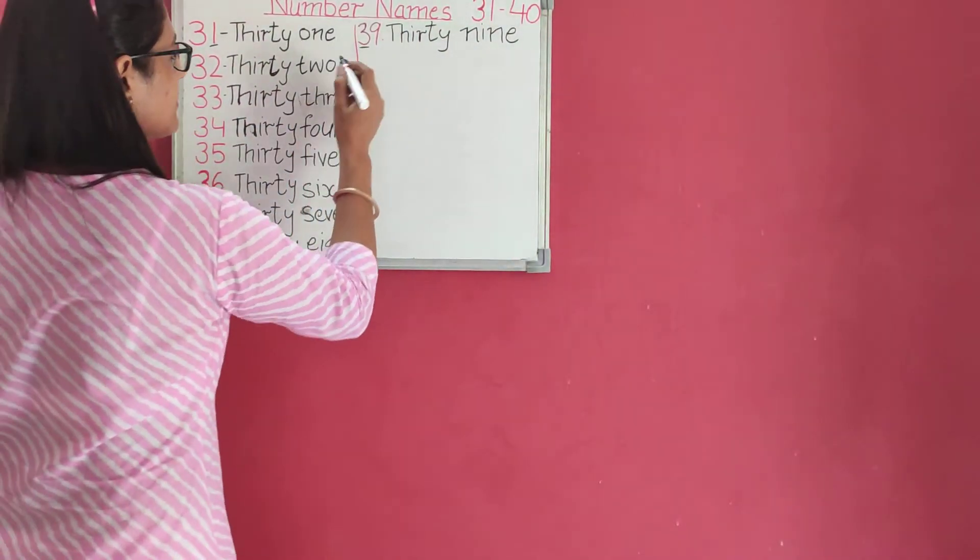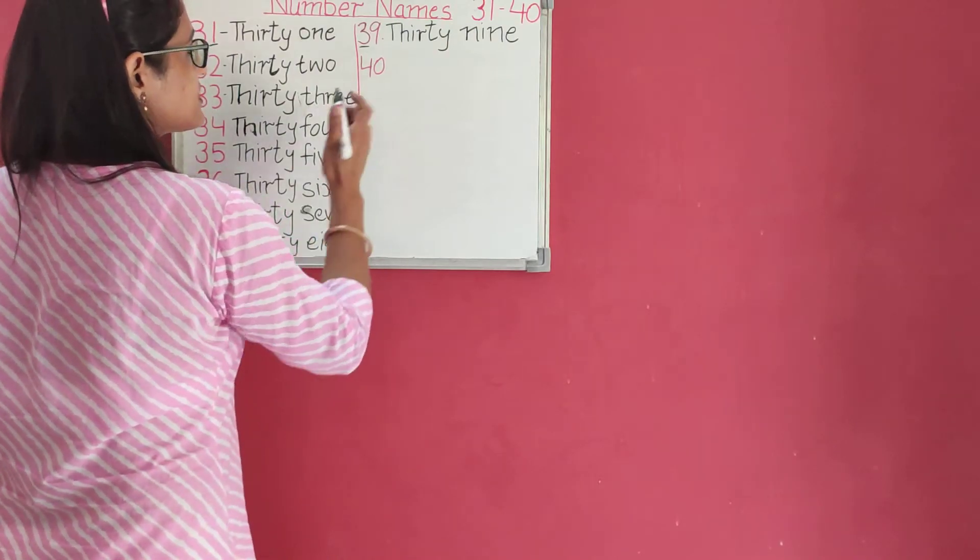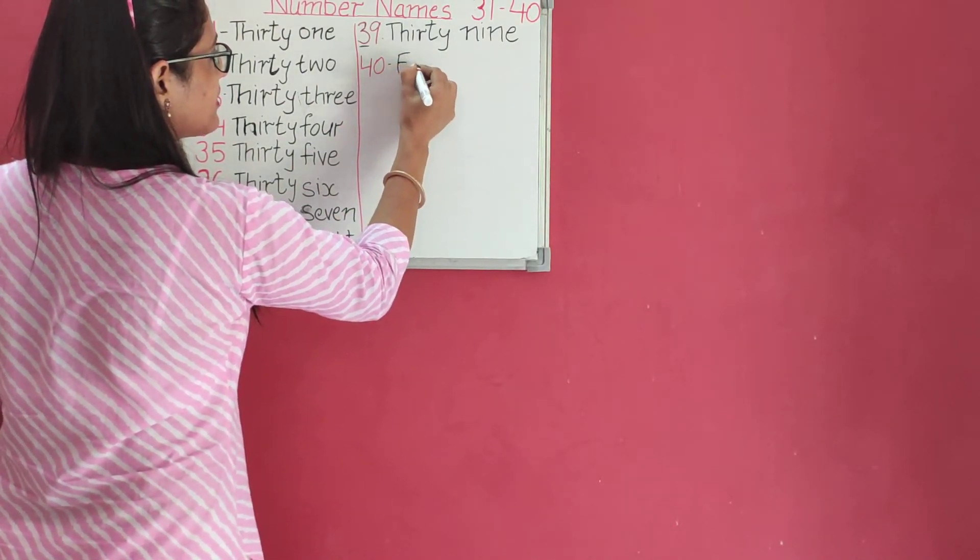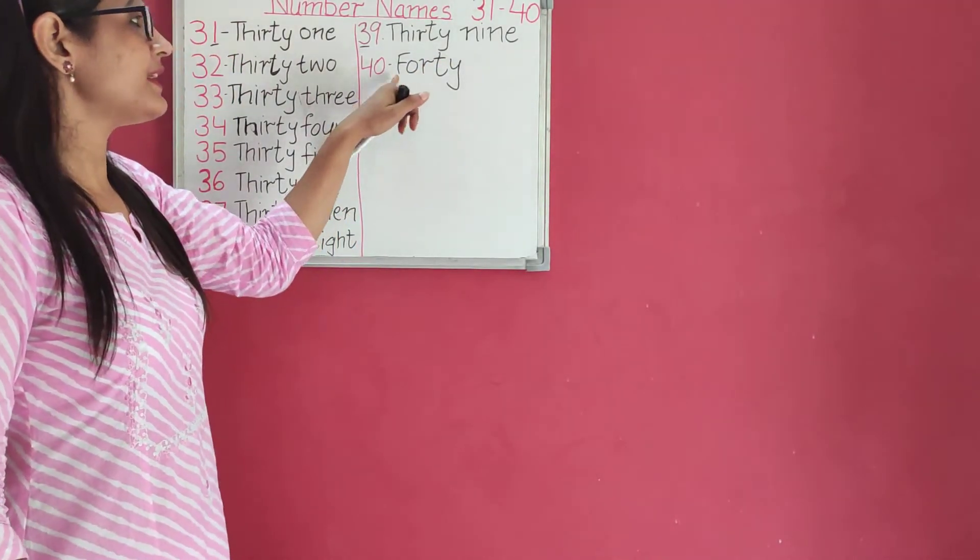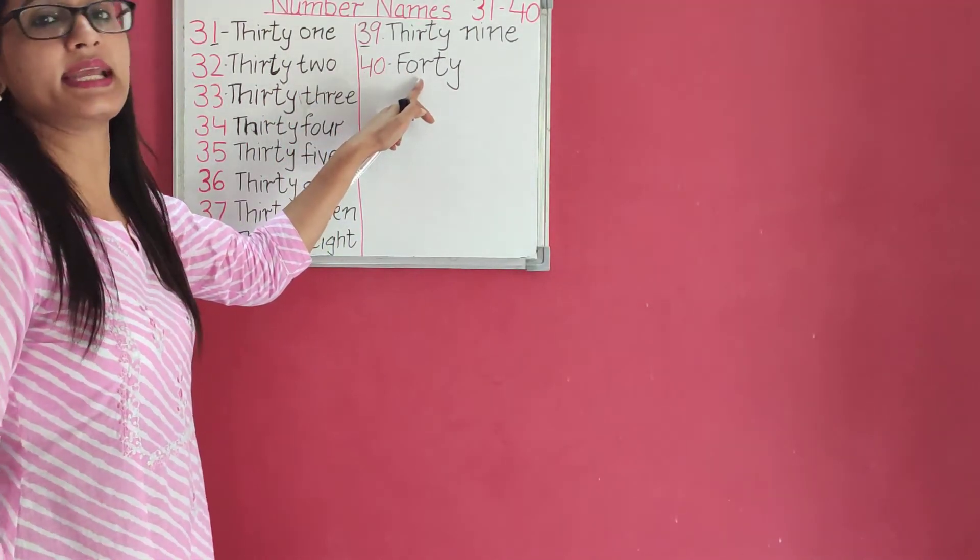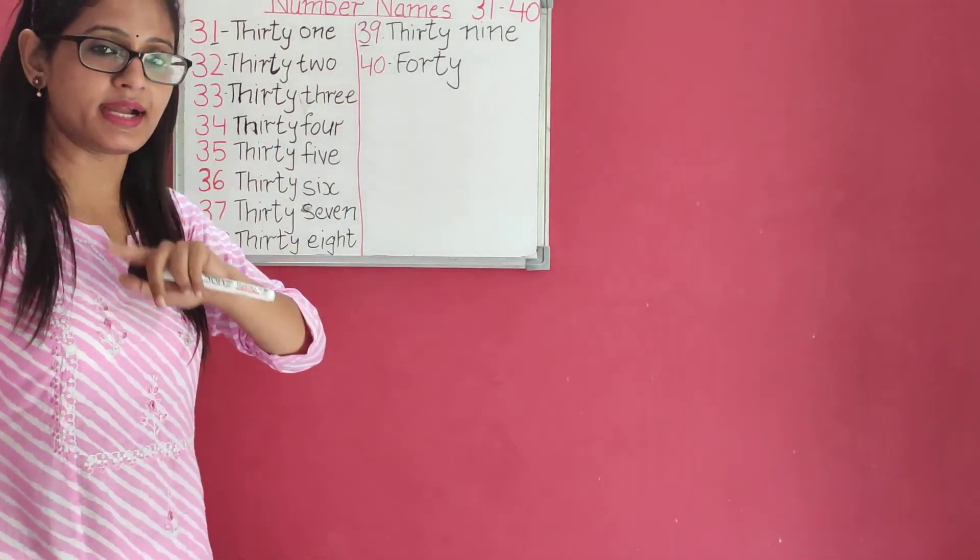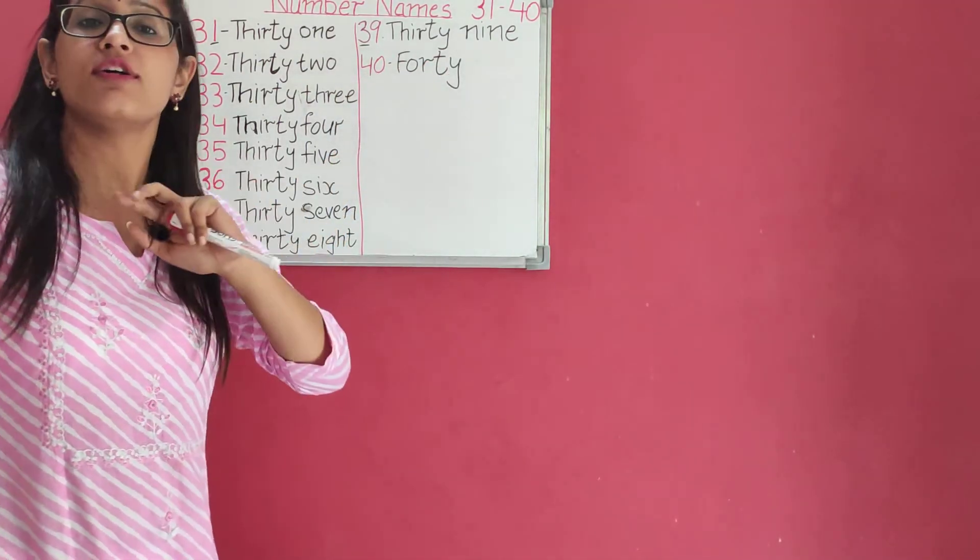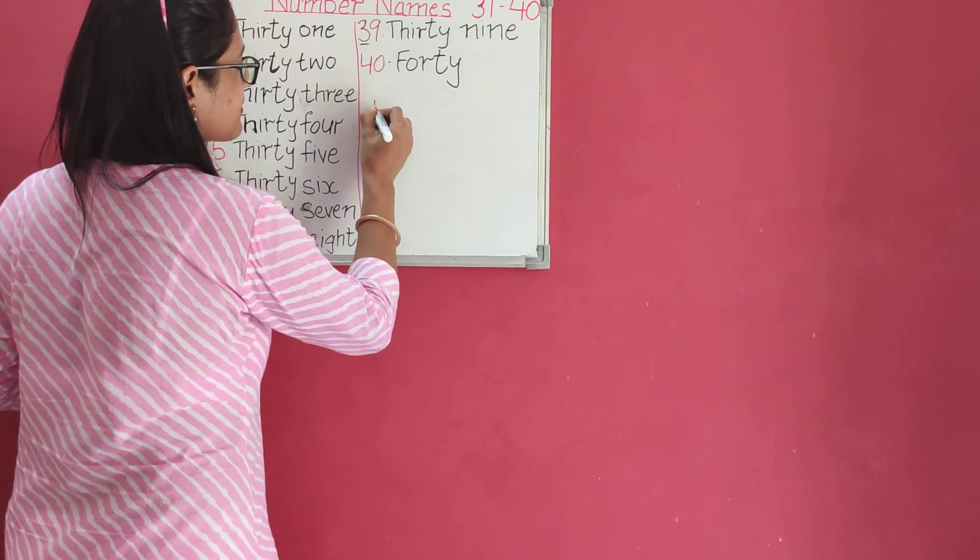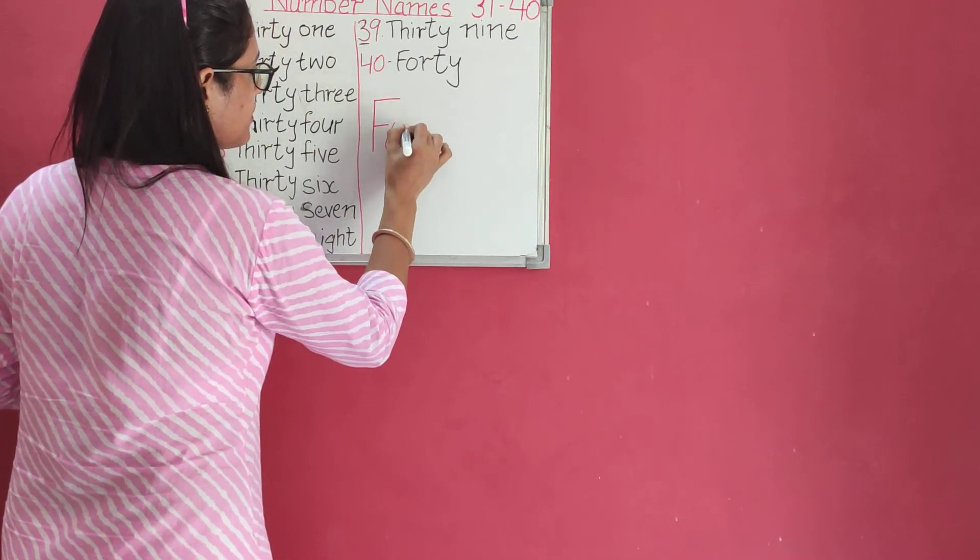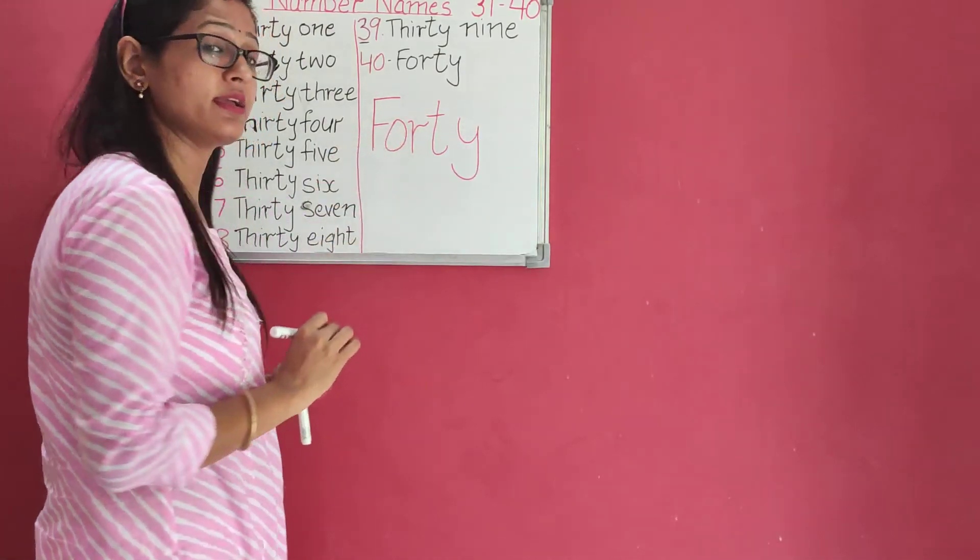Now, what comes? Forty. F-O-R-T-Y. It is forty. It is not F-O-U-R. You will not write F-O-U-R. You will write forty: F-O-R-T-Y, forty. Okay? So, F-O-R-T-Y, forty.